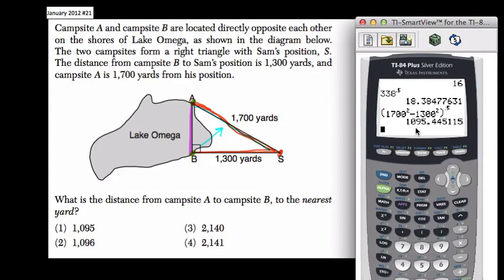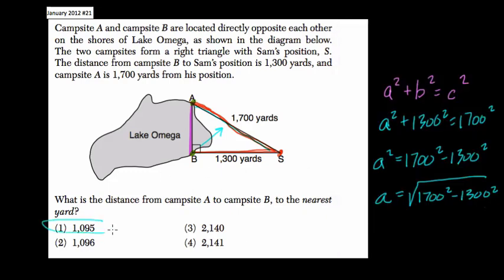They want us to round to the nearest full yard. Since it's 1,095.4, that 4 is below 5, so we round down to 1,095. That's our answer.